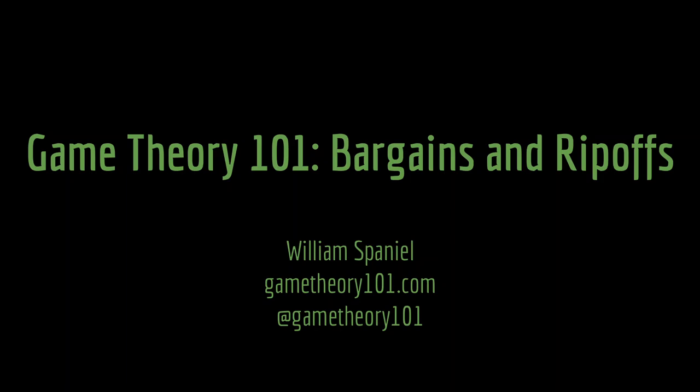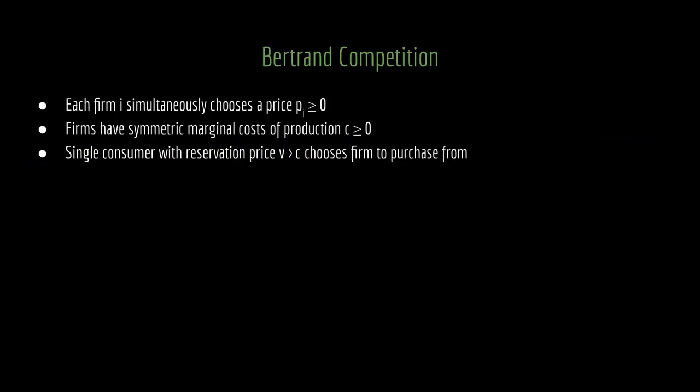Welcome back to Game Theory 101. I'm William Spaniel. Today's topic is bargains and rip-offs. We're working in the standard Bertrand competition framework. We have each firm simultaneously choosing a price P, and both of these firms have a symmetric marginal cost of production C, and we have a single consumer with a reservation price V that is larger than that marginal cost of production. That's our standard Bertrand competition framework.